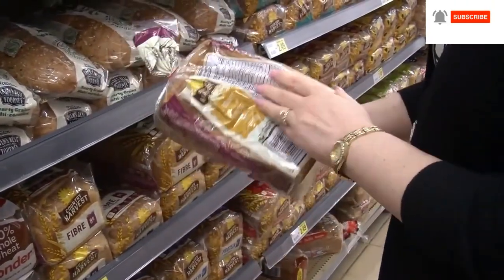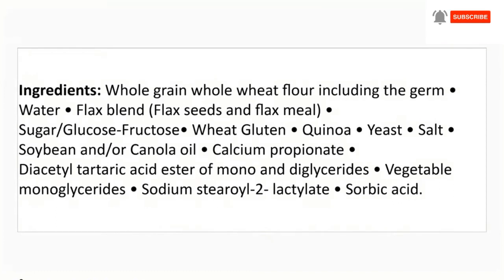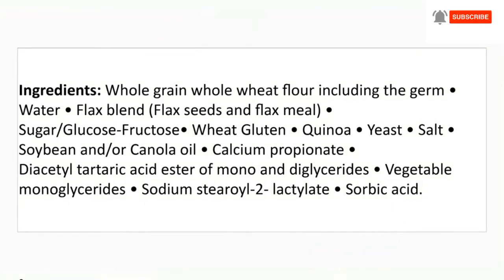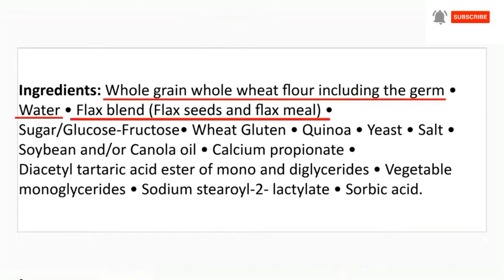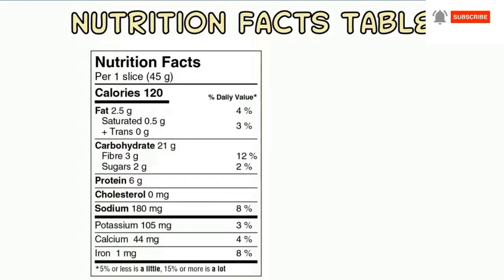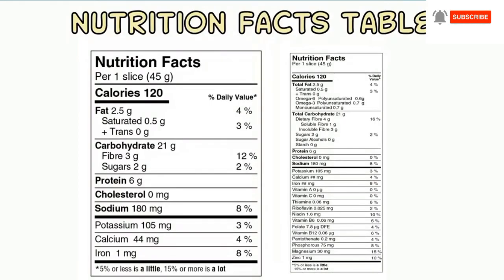First, look at the ingredients. Ingredients are listed in order by weight, from the most to the least. So aim for products that contain nutritious ingredients at the top of the list. Next, look at the nutrition facts table for further information.